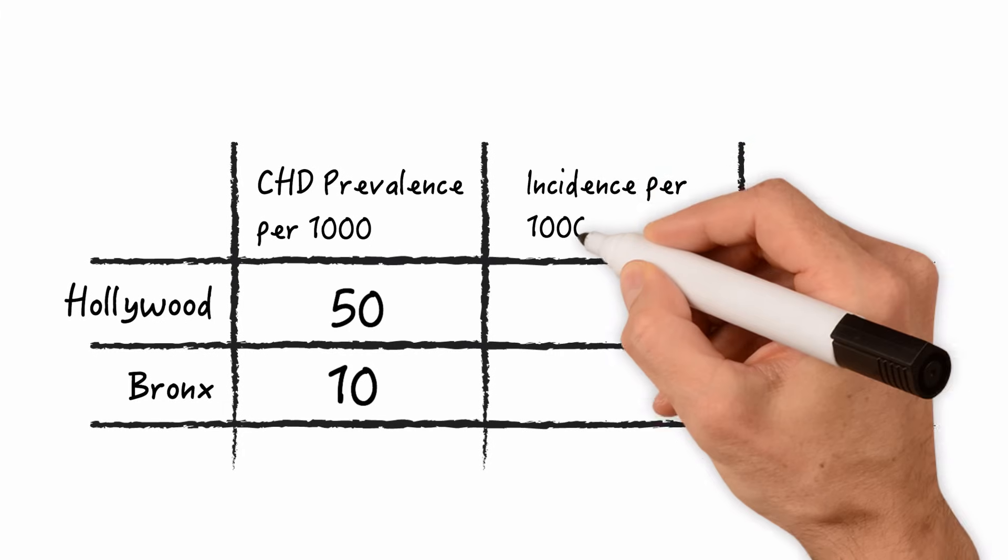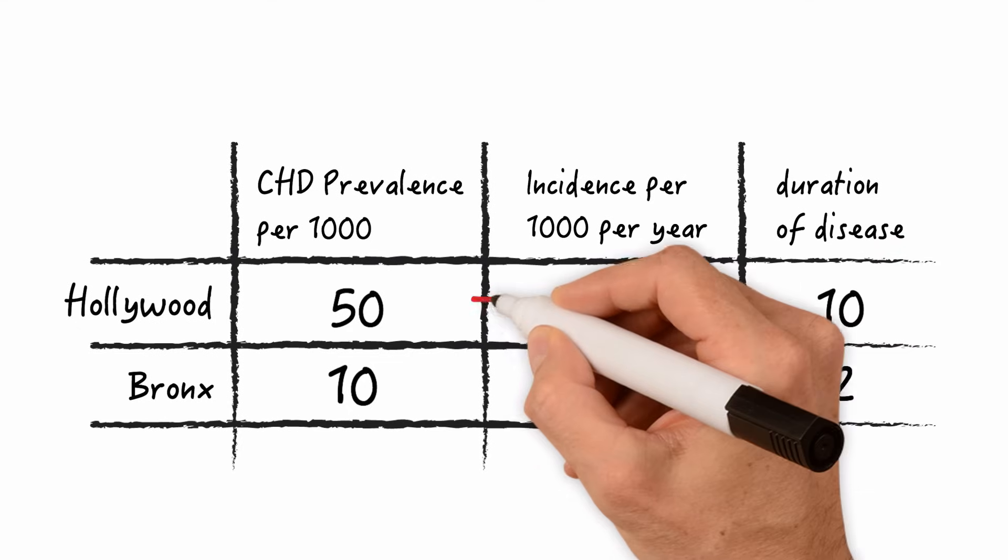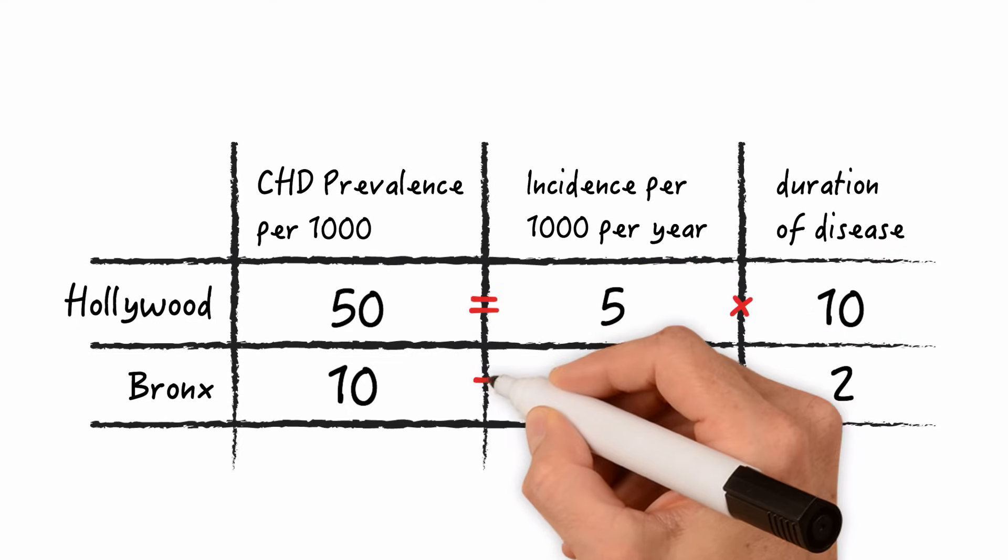Let's look at the incidence rates and duration of disease in both locations. Incidence is 5 per 1000 per year in both locations. But duration of disease is 10 years in Hollywood due to better care whereas in the Bronx people die from CHD after two years. So in fact the higher prevalence in Hollywood is just an expression of better care of an incurable disease. You see we said prevalence is equal to incidence times duration. So 5 times 10 is 50 and 5 times 2 is 10.